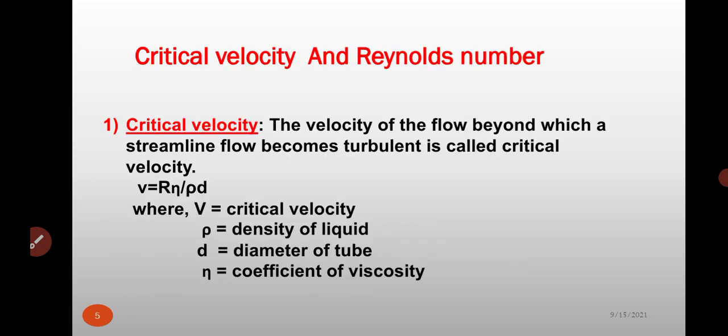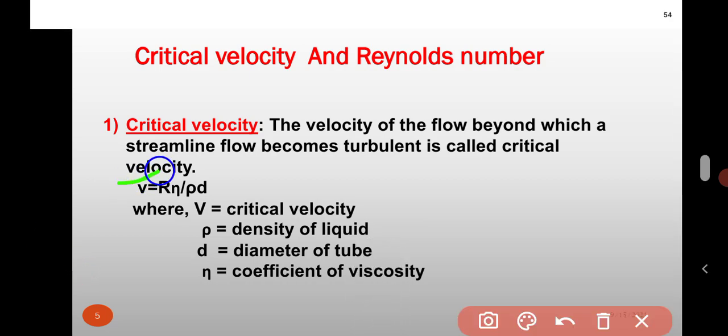Next topic, critical velocity and Reynolds number. First one, critical velocity. The velocity of the flow beyond which stream line flow becomes turbulent is called as critical velocity, where V is equal to R times eta upon rho times d.